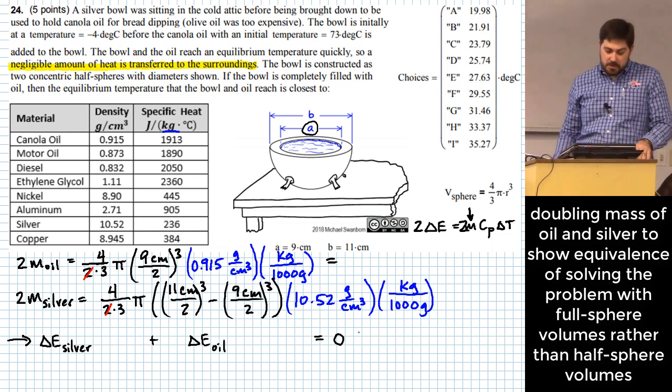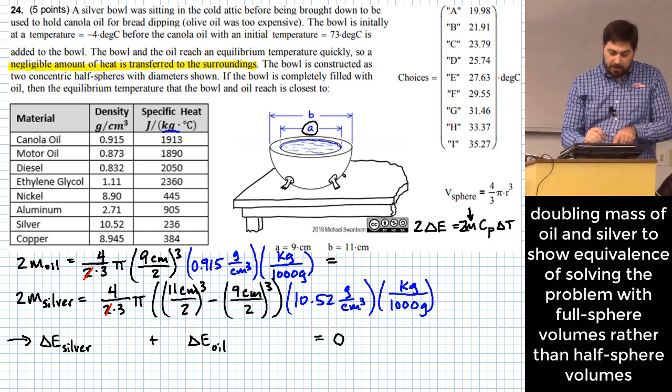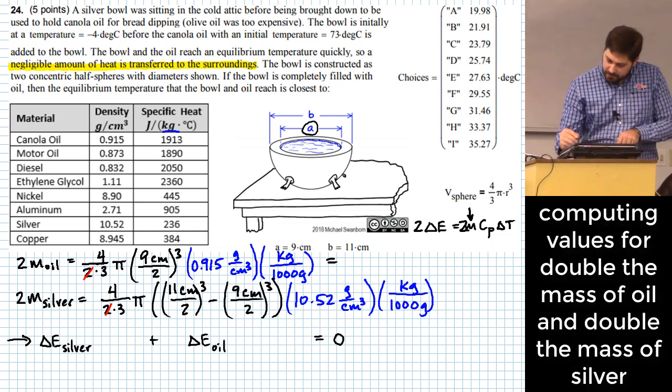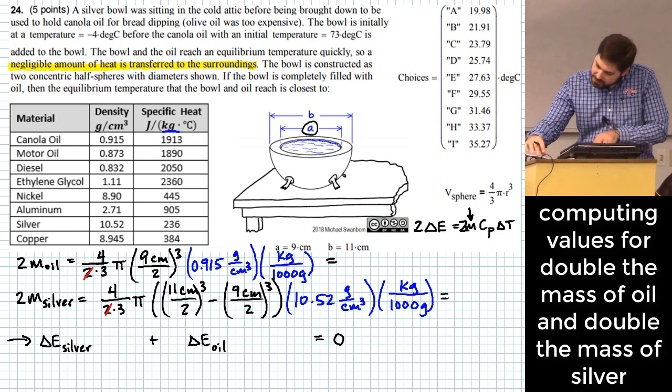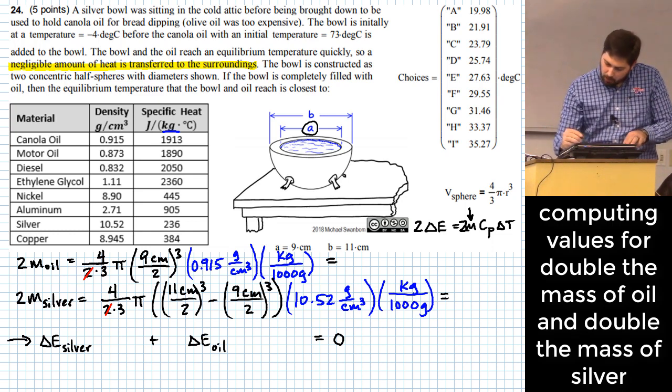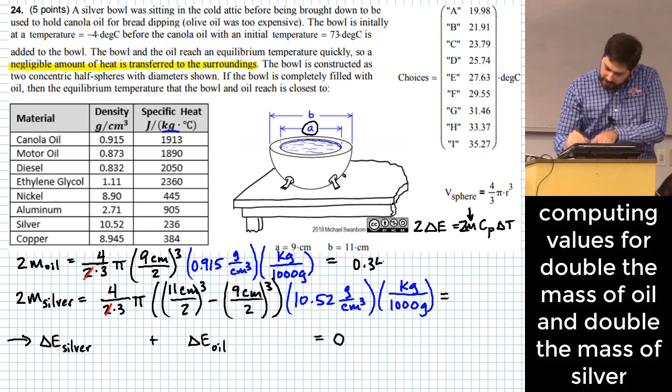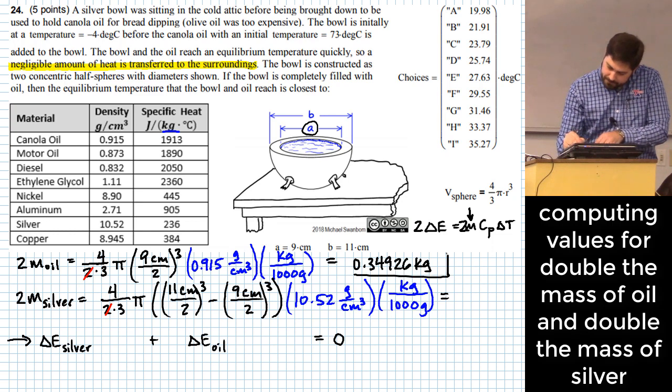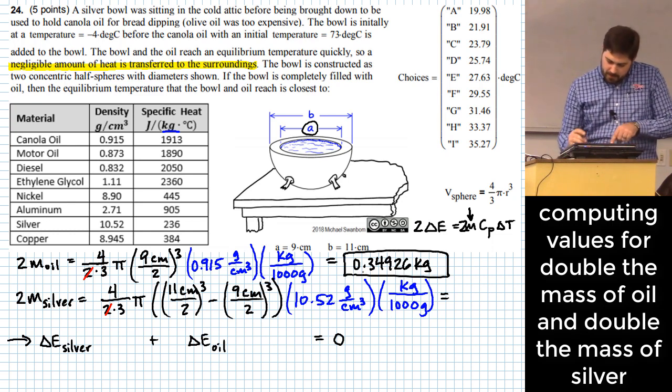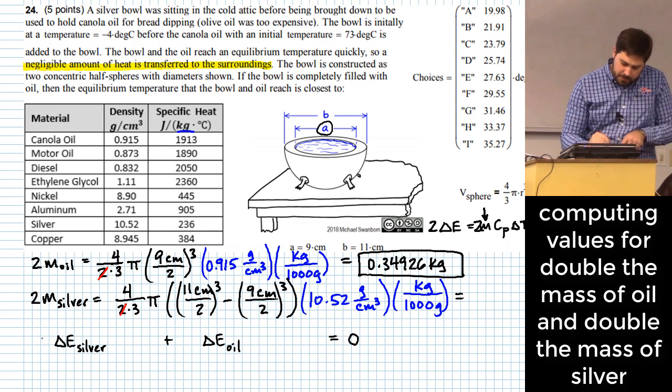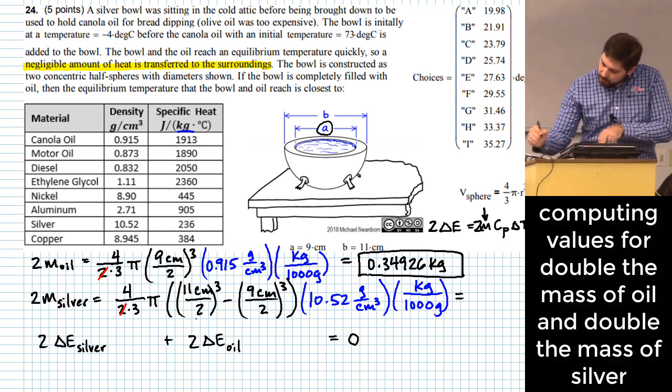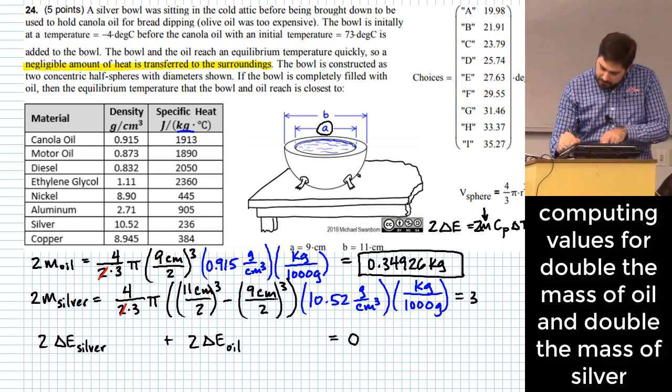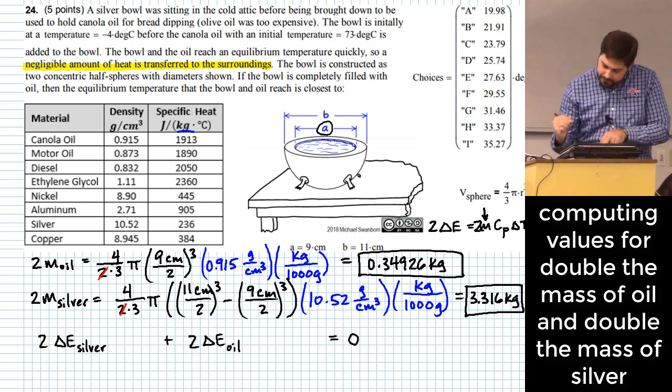So now that I've done this, I may as well just go through and do it for double the amount of oil and double the amount of silver. And so I actually have that, believe it or not, written in my notes right here. This turns out to be 0.34926 kilograms of oil, three, four, nine, two, six kilograms. I'm going to go ahead and leave the twos in here so that we're clear. And then for the silver, I wind up with 3.316 kilograms.